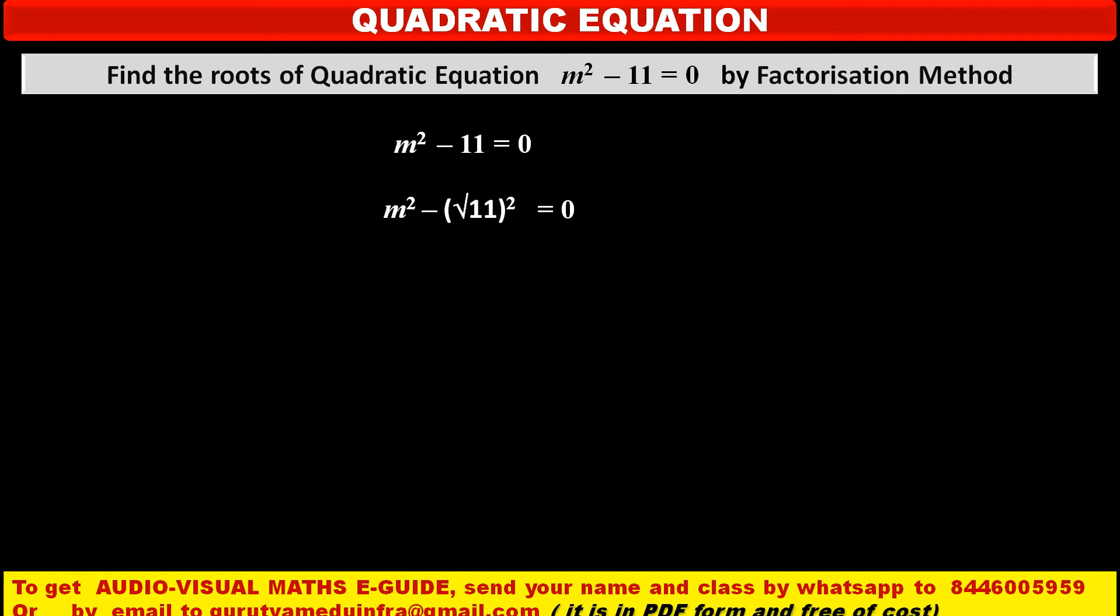At the place of x, variable m is given, and at the place of y, constant term √11 is given. So now see what happened.